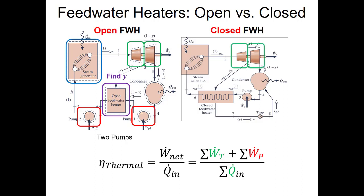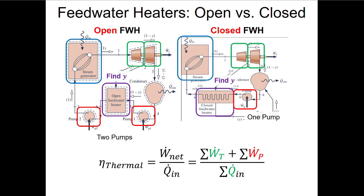In the closed feed water heater we also have two turbines, one pump, and one steam generator where we're adding heat. Again we might want to find y by doing a first law analysis on the closed feed water heater. It's a good idea to look for a heat exchanger — doing a first law analysis on the whole heat exchanger can often help you find a mass flow rate.